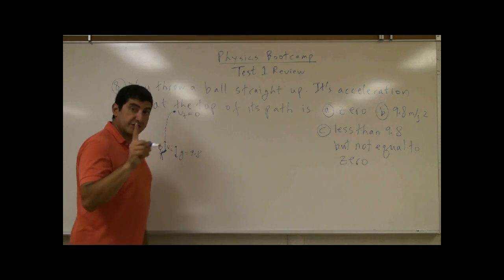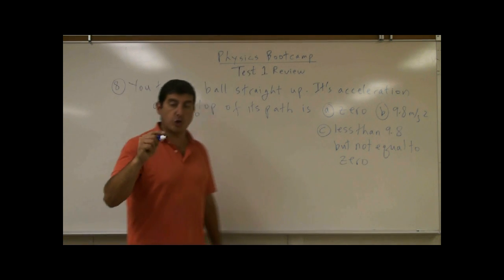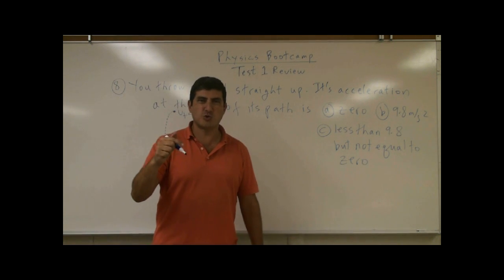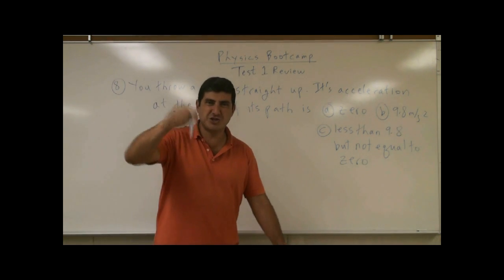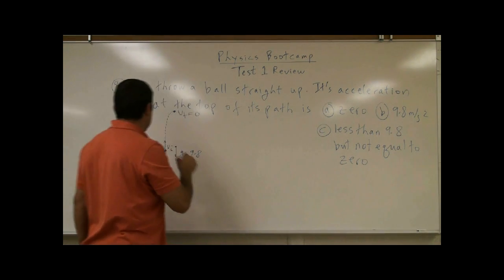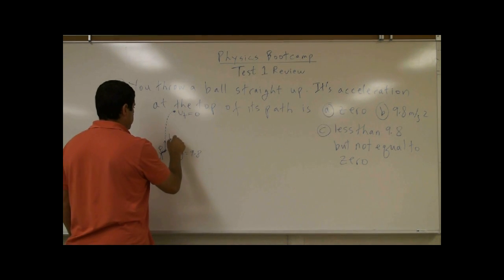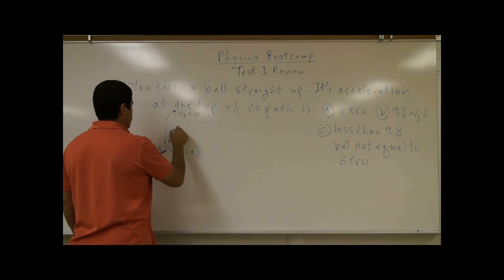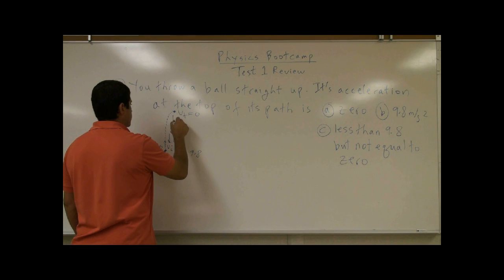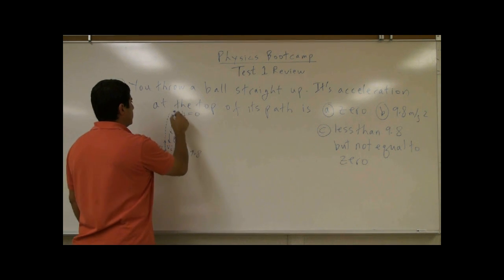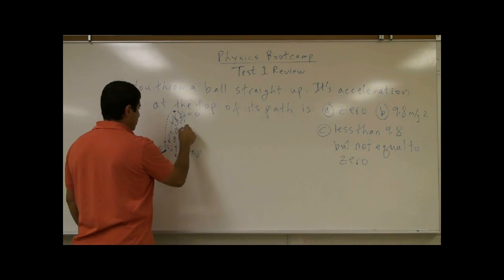However, the acceleration should always be equal to G, right? So the acceleration is G, the acceleration is G, the acceleration is G, the acceleration is G. Then the velocity starts turning back.